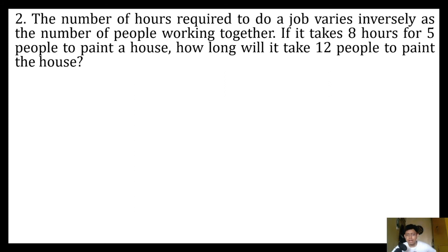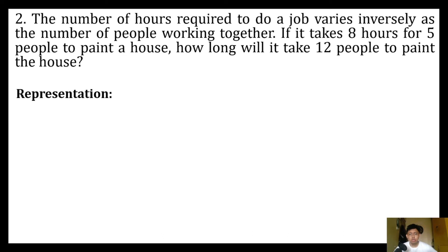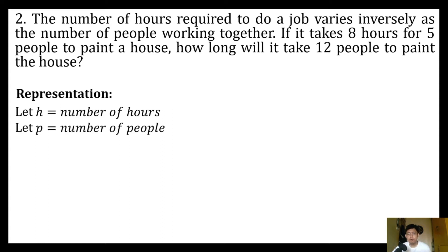First we need to get our representation — what are the two variables present in our word problem? Looking at our first sentence, we have the number of hours and the number of people. Let h be equal to the number of hours required to do a job, and let p be the number of people working together.